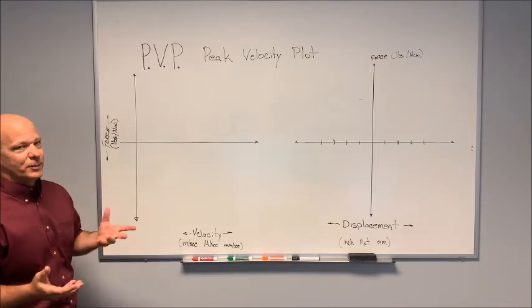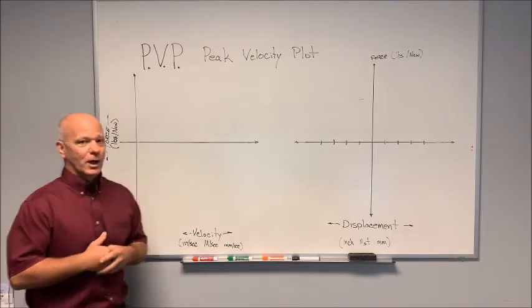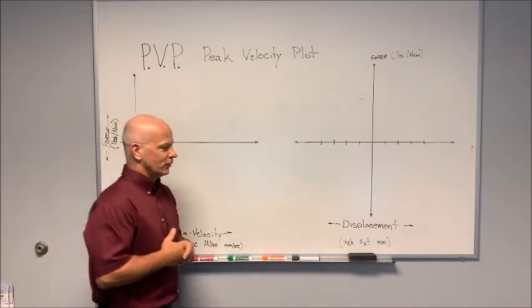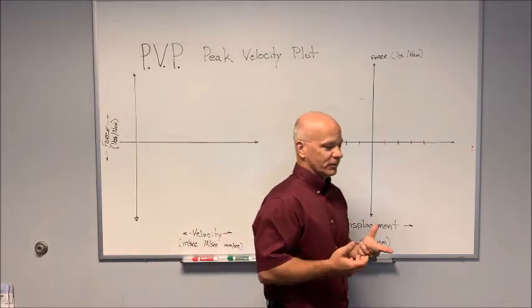So PVP — peak velocity plot. What does that mean? Where does it come from?